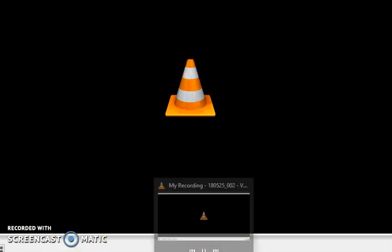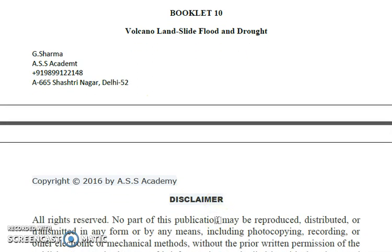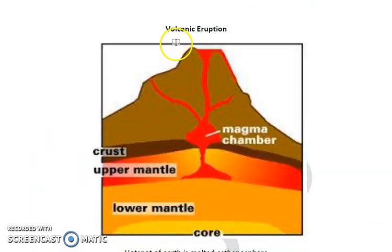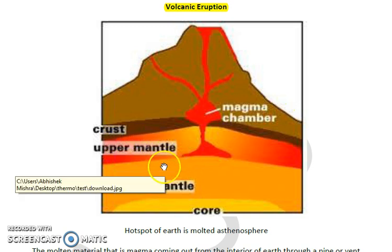This is the third part of natural hazards, which includes volcanoes — how they happen — as well as landslides, floods, and drought. Starting specifically with volcanoes, as you can see in the picture, we have shown a diagrammatic view of how a volcano erupts, showing the upper mantle, crust, lower mantle, core, and the magma chamber, and how magma comes out in the form of lava from the volcano.